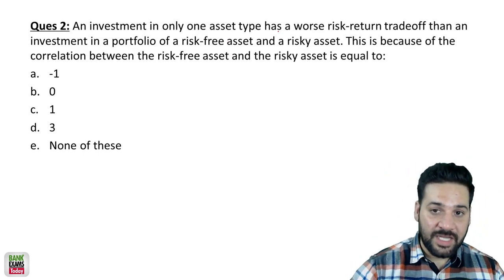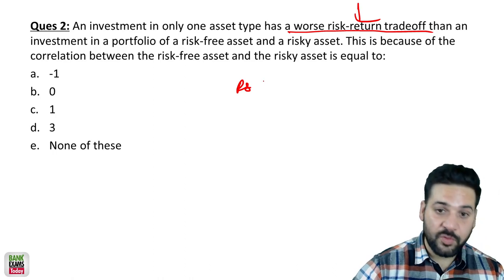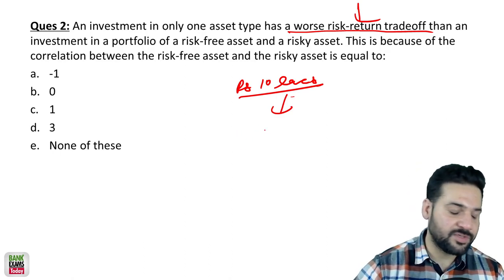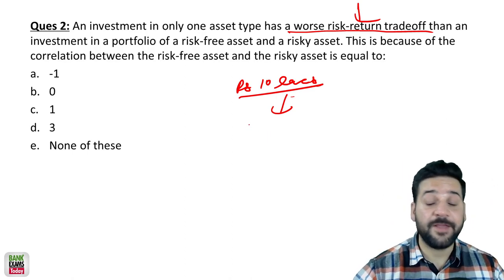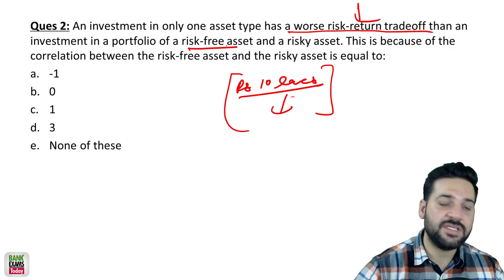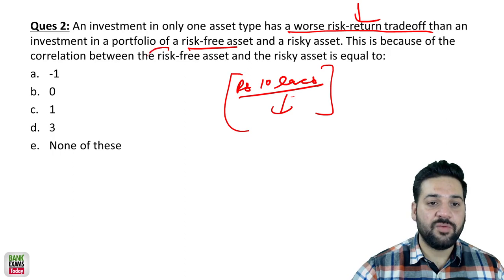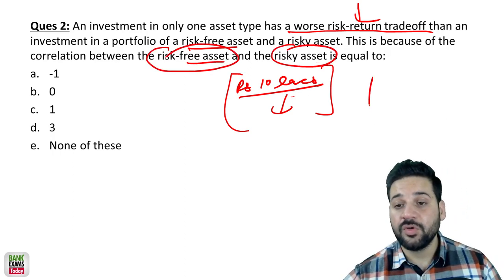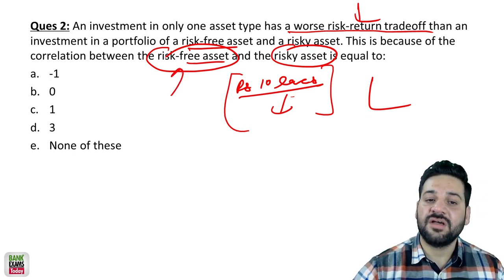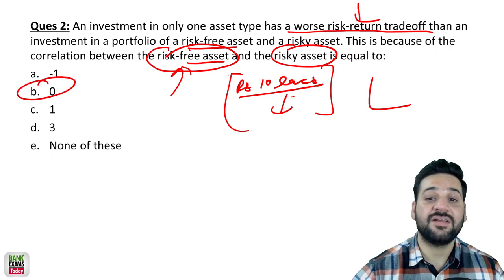An investment in only one asset type has the worst risk-return trade-off. Let's say you had rupees 10 lakh to invest and you invested all that money into Yes Bank shares — now those shares are down by 97–98% from 52-week highs. So why do we invest in risk-free assets like FDs and PPFs? To decrease the risk. Because there is no correlation between the risk-free asset and the risky asset. Although the market crashed during COVID by 50–60%, the return of the risk-free asset remained the same. The correlation between the risky asset and the risk-free asset is zero.